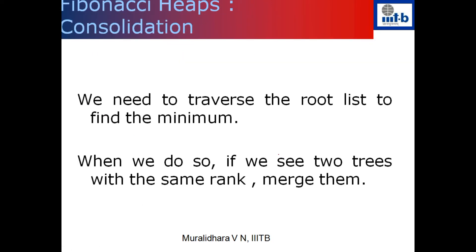The algorithm we are going to apply is that we need to traverse through the entire list to find the minimum. When we do so, we will do something more than what is required. Our objective of traversing through the list is to figure out what is the next minimum. But when we do that, we will also do something more - if I come across two trees with the same rank, I will merge them. The rank of a node is the number of children it has. If I come across two nodes of the same rank, I will merge them.